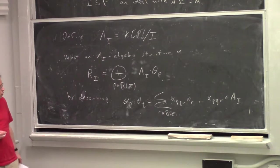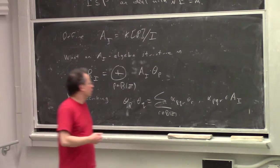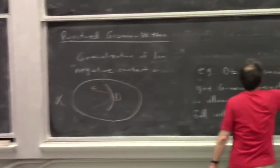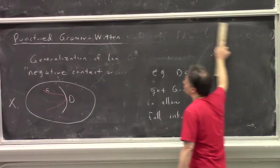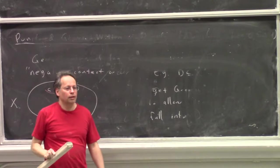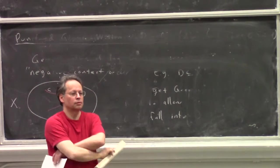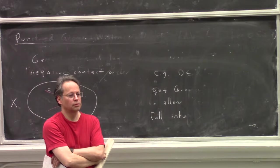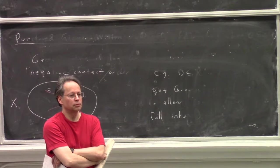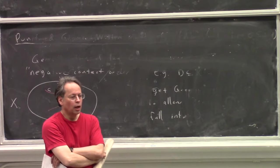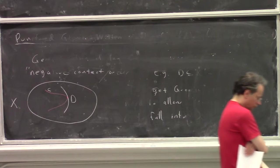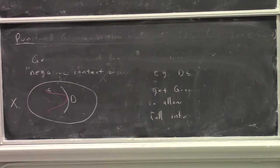Theta_p times theta_q is equal to summation over all r in B of Z of alpha_pqr, where these coefficients should be in the ground ring alpha_pqr in A_I. So this is our goal. If we wanted to define a ring, this is what we need to do. So we're going to define the structure constants.